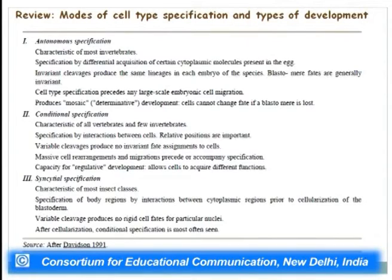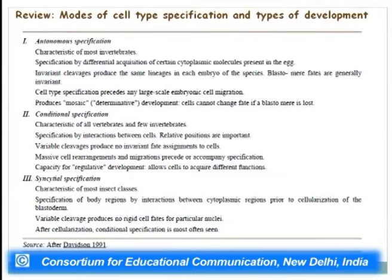Another kind of specification is conditional specification, characteristic of all vertebrates and some invertebrates. Specification is by interaction between cells and their relative positions — regional specificity is important. This is the focus of today's session: inductive interactions, the cell-cell communication that occurs. Variable cleavages produce no invariant fate assignment to cells, and the capacity for regulative development allows cells to acquire different functions.